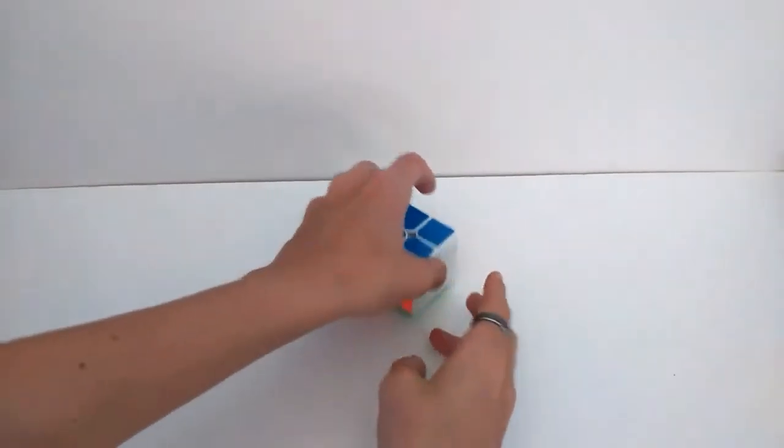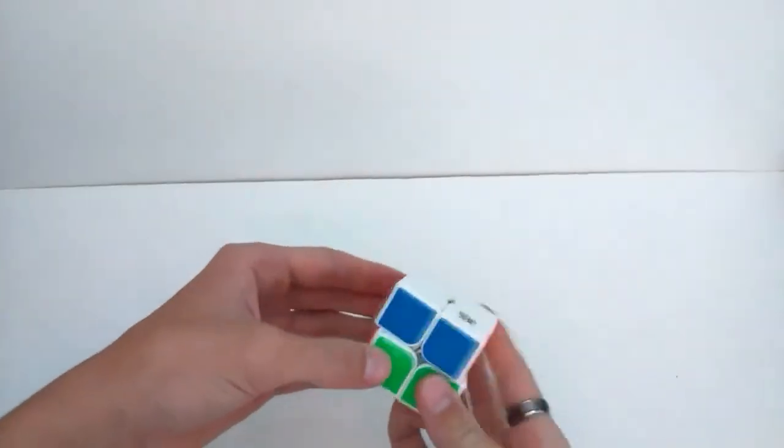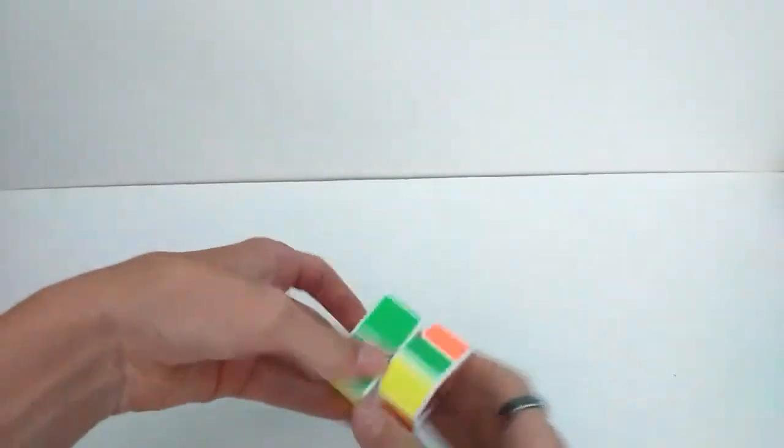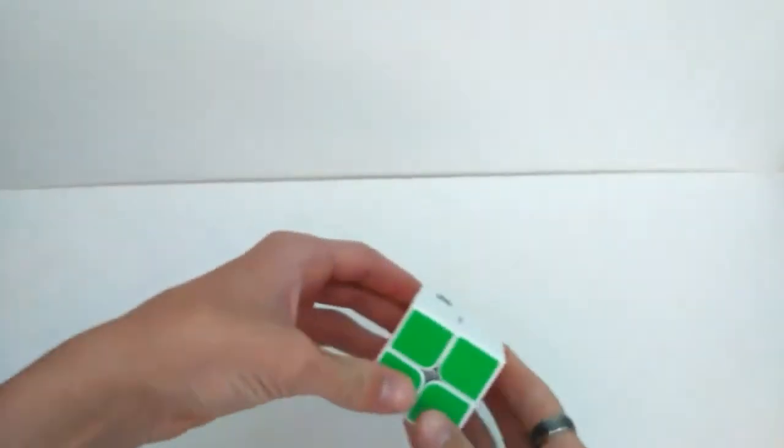Alright, so first let's talk about turning. It's a pretty fast cube but controllable. Algorithms flow very nicely, and you rarely get catches on this, and when you do they're not very big.